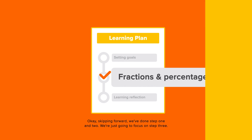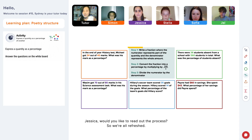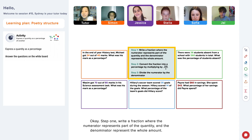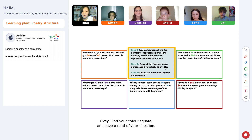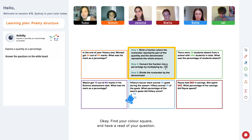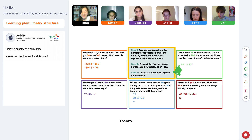Okay, skipping forward, we've done step one and two. We're just going to focus on step three. Jessica, would you like to read out the process, just so we're all refreshed. Step one: write a fraction where the numerator represents part of the quantity and the denominator represents the whole amount. Step two: convert the fraction into a percentage by multiplying by 100 over one. Step three: divide the numerator by the denominator. Good work, Simon.